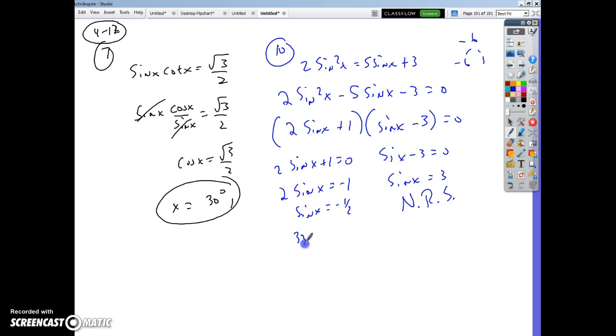So that would be 30 degrees and 210 degrees, plus 360 degrees n, plus 360 degrees n, where n is equal to negative 1, 0, 1, 2, and so on.